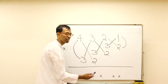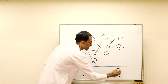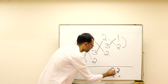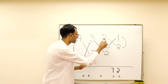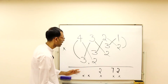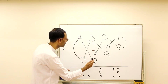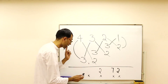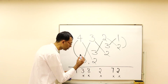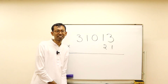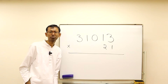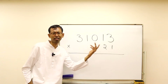We start from the right: one times two is two. The second calculation is cross multiply and add: four plus three is seven. The next calculation — cross multiply and add: six plus six is twelve, one is a carry, two comes down. The next — cross multiply and add: eight plus nine is seventeen, plus one is eighteen, one is a carry. Finally, four times three is twelve, plus one is thirteen. As simple as this!